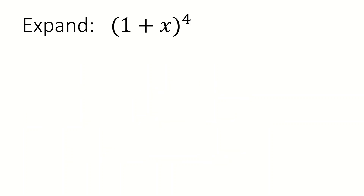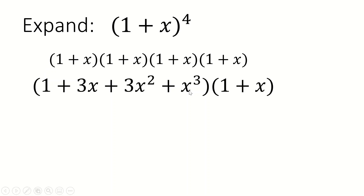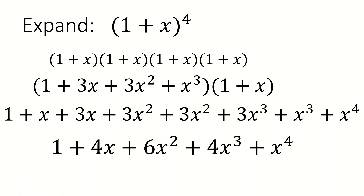We could even do (1+x)^4, because this is just 1 plus x times itself four times. We know what each of these two things is. I'm going to take the result from (1+x)^3 and use it directly. Then we multiply through: 1 by (1+x), then 3x by (1+x), then the x squared term by (1+x), and then the x cubed term by (1+x). Collect them all together and we get the expansion of (1+x)^4.